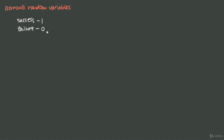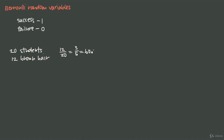Let's say I want to know how many students in my math class have brown hair. There are 20 students in my class, and I see that 12 of them have brown hair, which means 12 out of 20 have brown hair. Reducing that fraction gives us 3 fifths, which is equal to 60%. So 60% of the students in my class have brown hair. I'm going to define success for this Bernoulli random variable as having brown hair, and failure as not having brown hair.